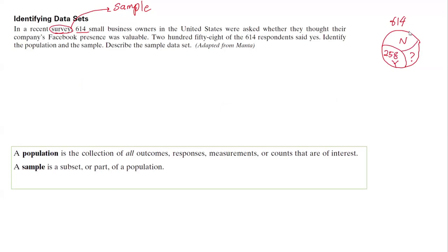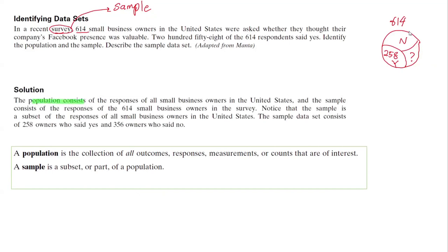First of all, because of the keyword survey, you have information about your sample. 614 represents the sample for you. What is population? Population consists of all responses of all small business owners in the United States. Do I have every piece of information there? Of course not. That's a huge data set. I don't know how many small business owners are in the United States, but I took a random sample of 614. So this is your population. We don't have information about population, so that's why we took a random sample out of it. It's a common mistake for students—the students think 614 is the population, which is not.